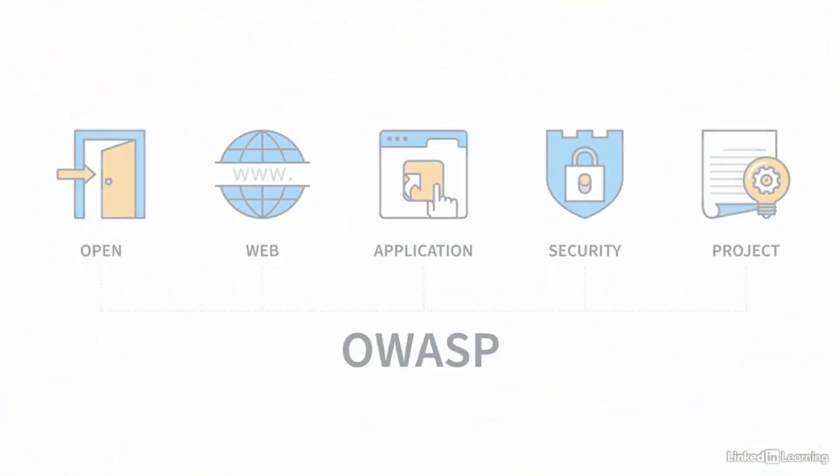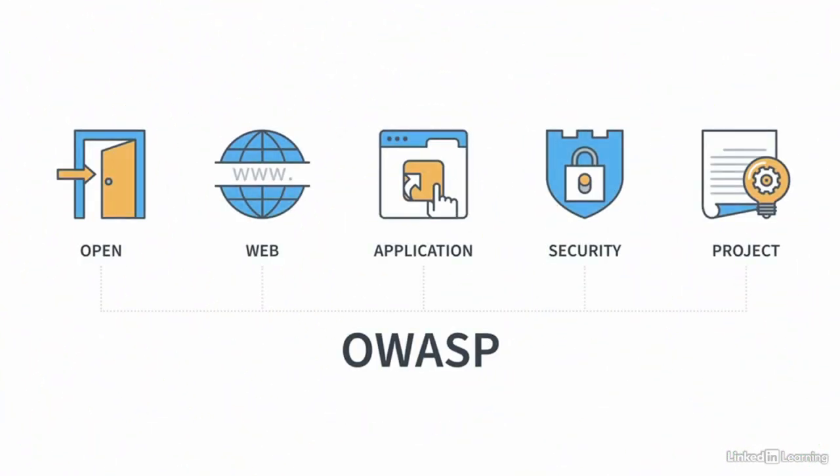The Open Web Application Security Project, or OWASP, published the IoT Top 10, which is a list of the key vulnerabilities to avoid when building, deploying, or managing IoT systems. If you're responsible for securing IoT devices, I recommend reviewing this list to make sure you've protected against all of these vulnerabilities. By implementing these and the other protections covered, you'll significantly reduce your exposure to the threat of unmanaged IoT devices.